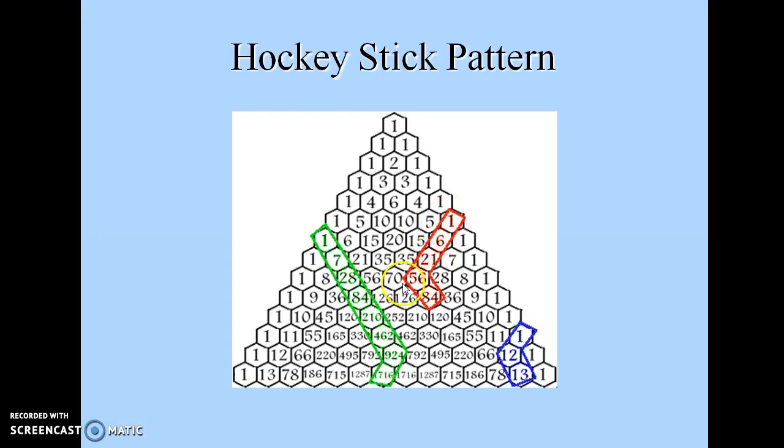This gives me the straight stick of a hockey. In order to get the actual shape of a hockey stick, I just move down towards my right and I get the number 84. This forms the actual shape of a hockey stick.